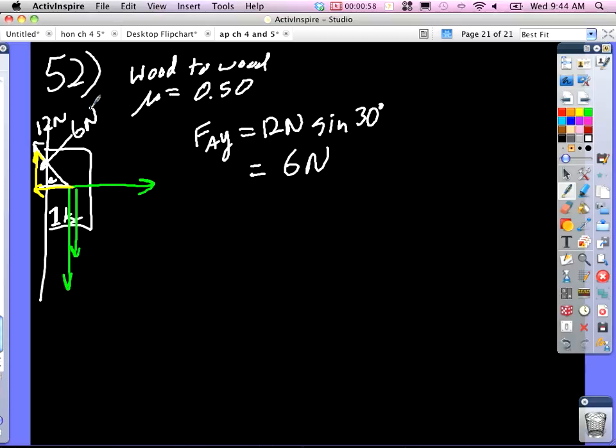So that right there is six newtons points up. And then this is one kilogram, so that is gravity, right? That's 10 newtons pointing down.